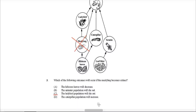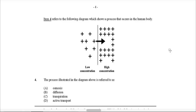We can also rule out D — caterpillar population increasing. Although it could be argued that the caterpillar would have one less competitor for hibiscus leaves and might benefit from more food availability, out of all the options C makes the most sense: the ladybird population will definitely die out since it has no other food source.